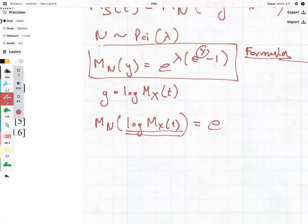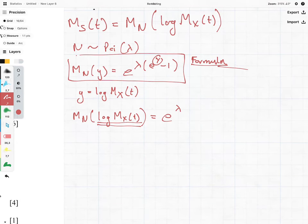and I'm going to put this expression over here every time we have the y. So we're going to get e to the lambda times e to the log Mx(t) minus 1. I know that looks quite crazy, but we know that the link between the exponential and the logs can cancel each other out. So we are left with the following.